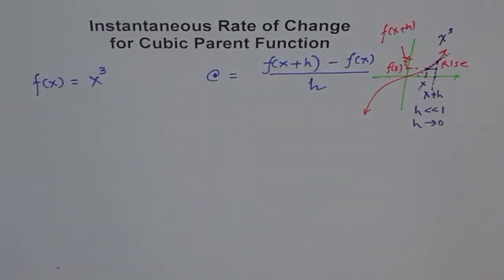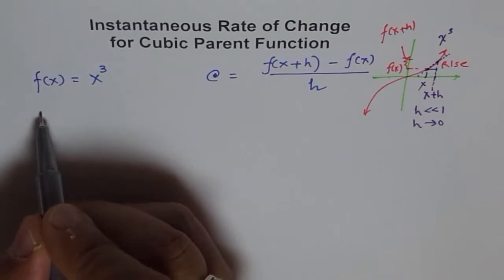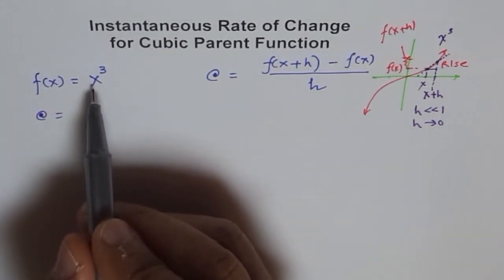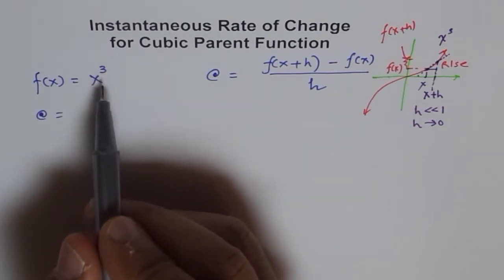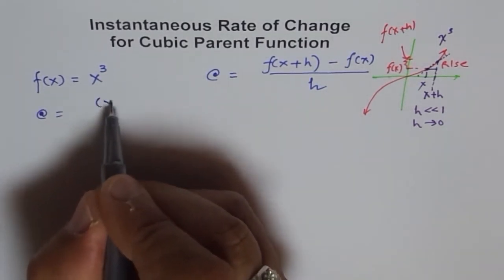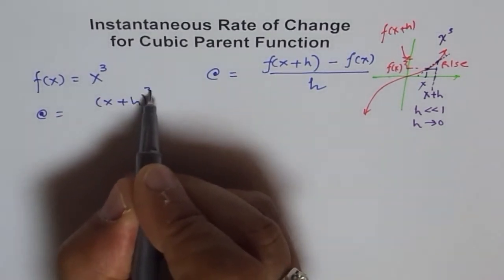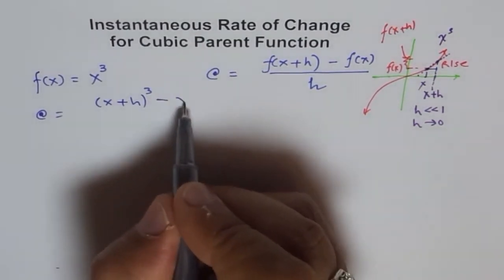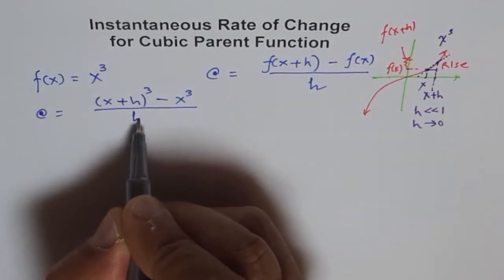Let me continue. The instantaneous rate of change of this function will be, I'll replace the function notation with x³, so it becomes (x+h)³ - x³ over h.